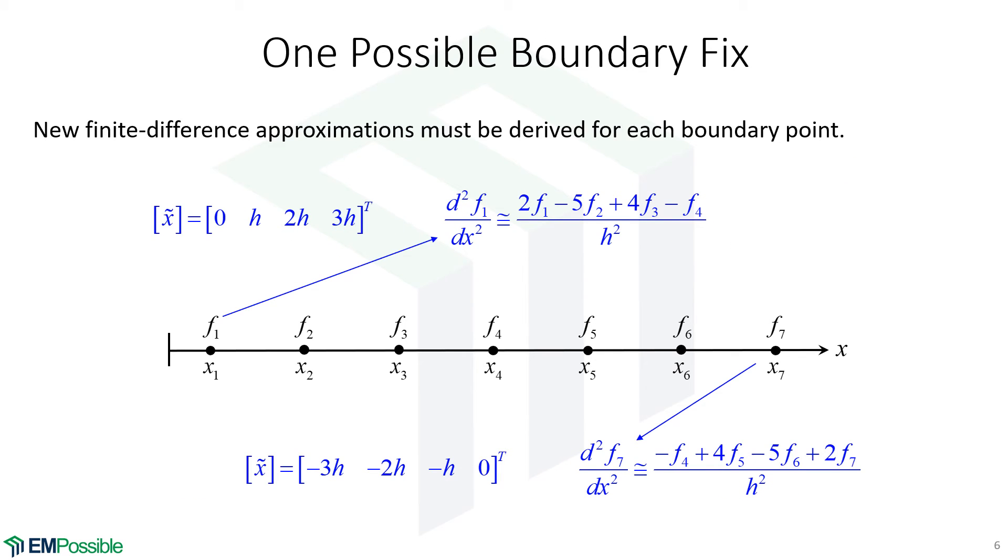Here's one thing we could do. We could derive special finite difference equations for the first and last point. For example, if we want to calculate the second order derivative at this point, we could actually use information from these four points.